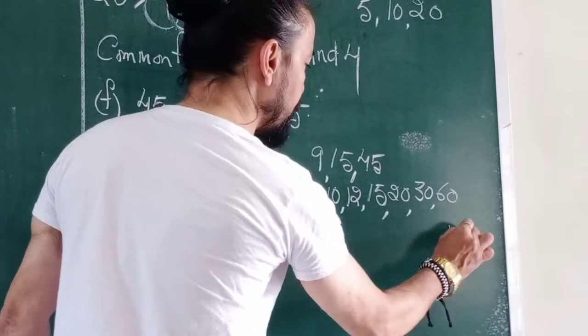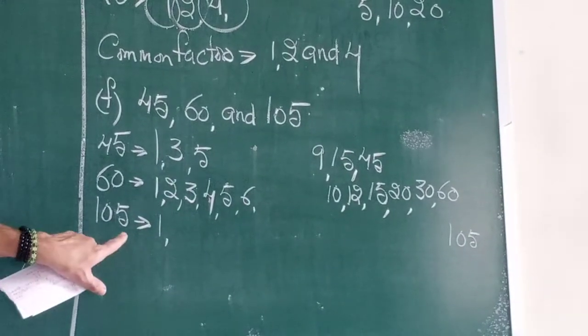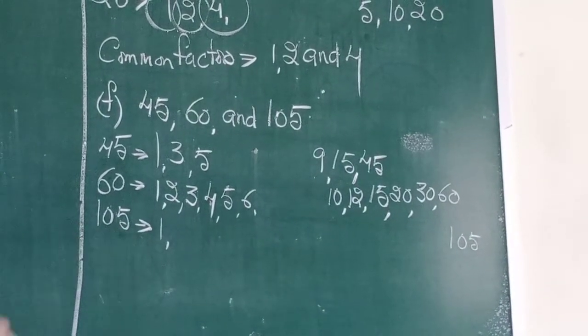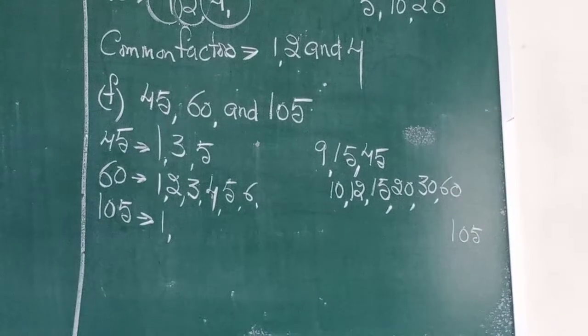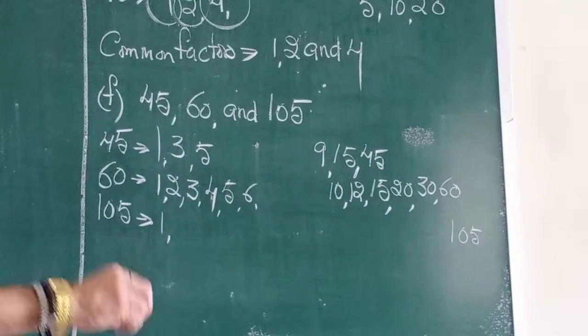1, 105s are 105. 2? No, because it's an odd number. 3? 1 plus 5 is 6. Yes. Test of divisibility. So, 105 is divisible by 3.